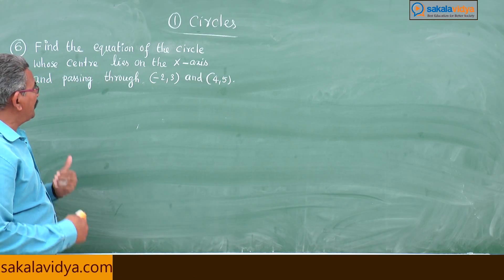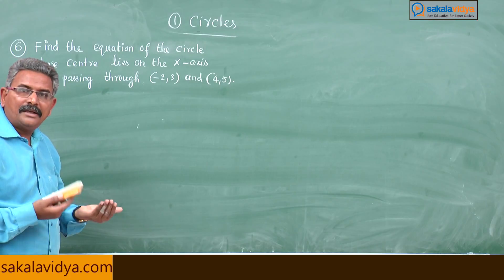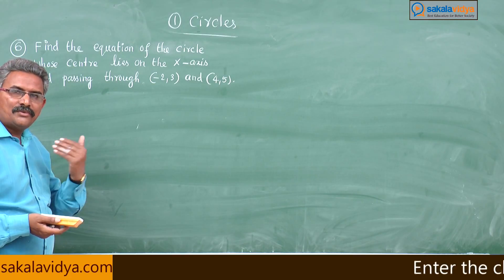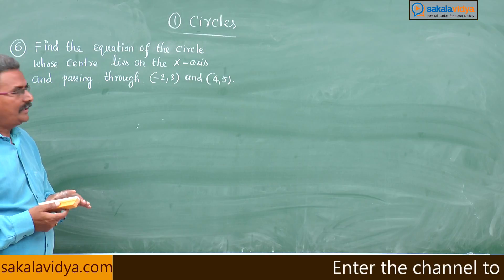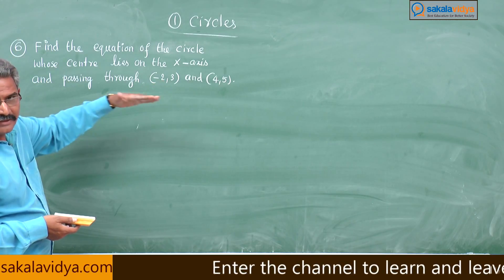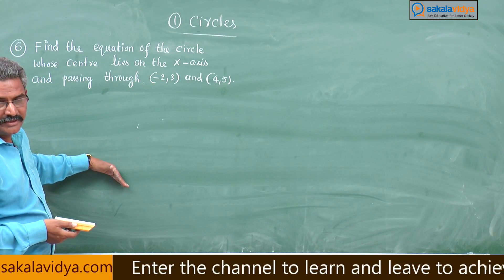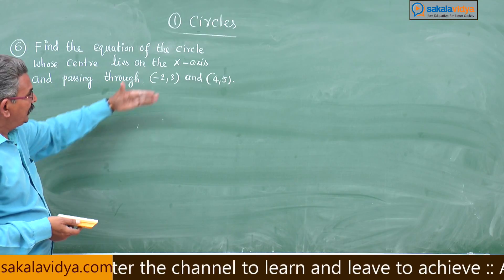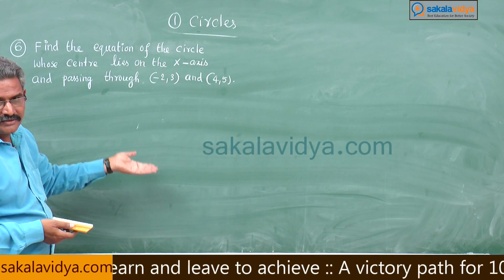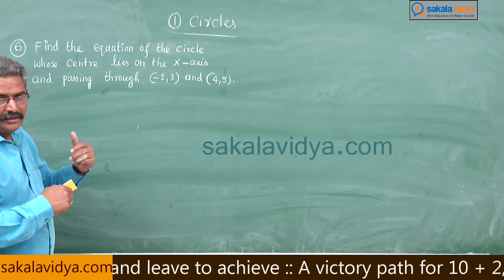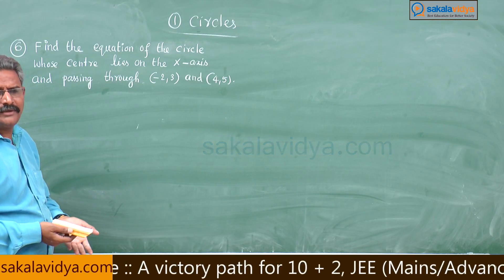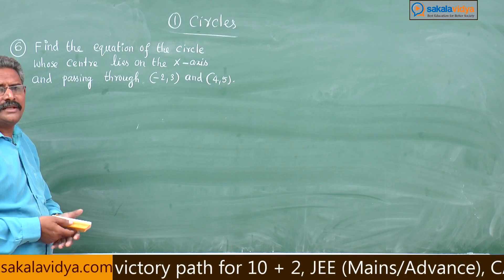So the equation of the circle becomes x squared plus y squared plus 2gx plus c equals 0. Since it passes through minus 2 comma 3, we get one equation in terms of g and c. If it passes through 4 comma 5, we get another equation in terms of g and c. Solving these two equations, we get the values of g and c, and from that we can find the equation of the circle.